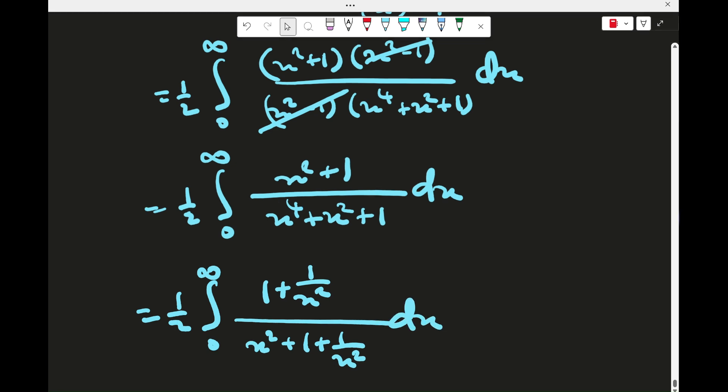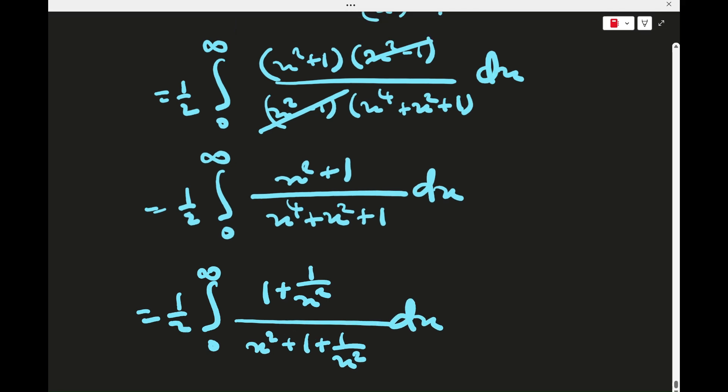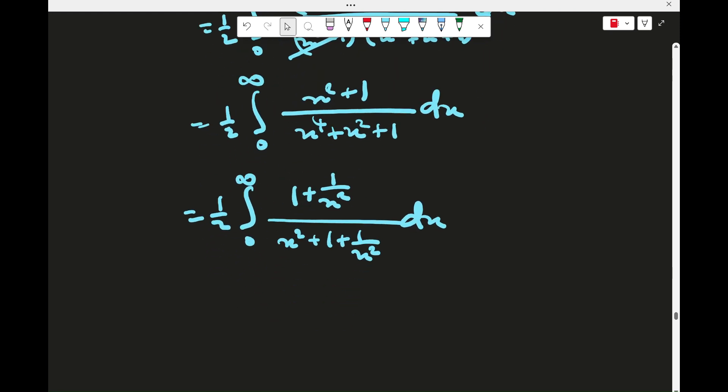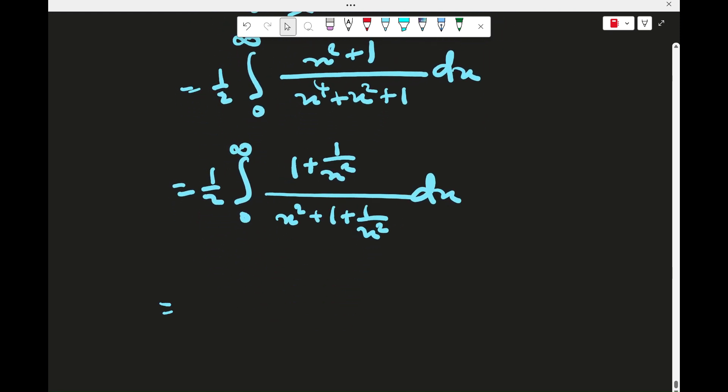This is good because now we can write the bottom as x minus 1 on x all squared plus 3, I think. Okay, let's do that. So we have half integral 0 to infinity, 1 plus 1 on x squared over x minus 1 on x squared plus 3.